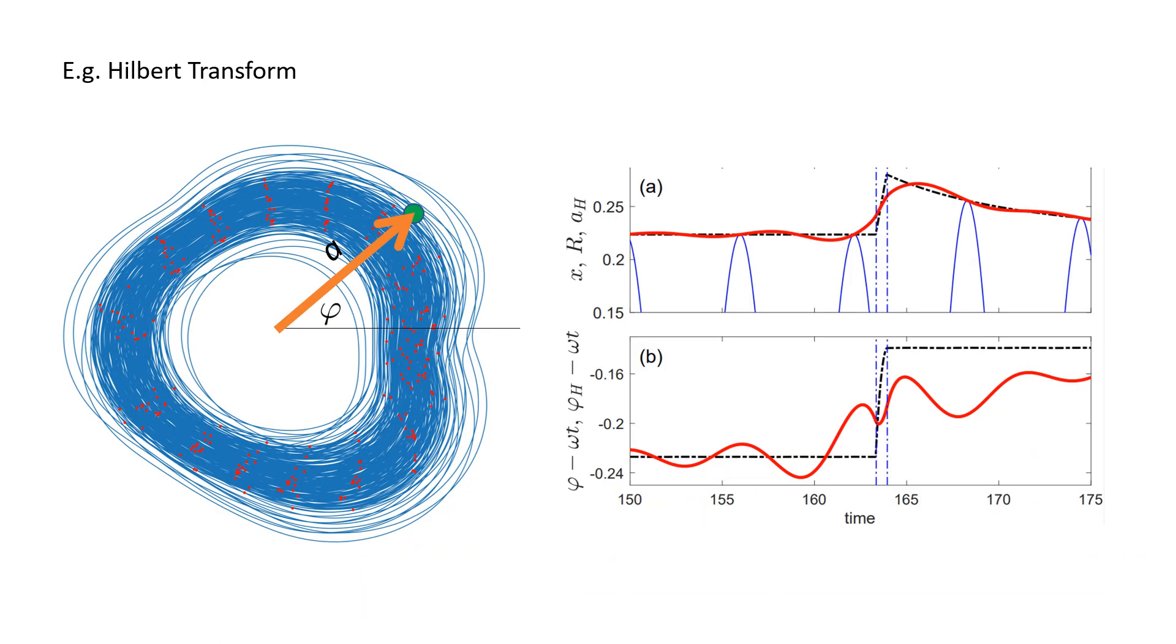For example, possibly the most used technique involves embedding the scalar signal with the Hilbert transform and then determining the phase and amplitude as the angle and the radial distance respectively. Among other things, this approach suffers from the filter effects of the Hilbert transform, which makes the determination of the deviations of phase and amplitude unreliable.